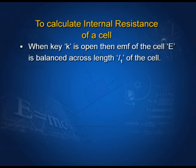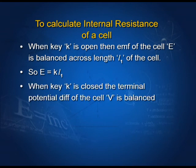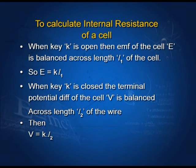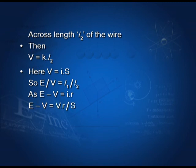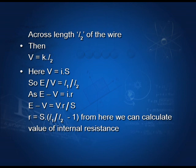When key K is open, the EMF E is balanced across length L1, so E = K·L1. When key K is closed, the terminal potential difference V is balanced across length L2, so V = K·L2. If the external resistance is S, then V = I·S, giving E/V = L1/L2. Since E − V = I·r, substituting I = V/S, we get r = S·(L1/L2 − 1), from which we can calculate the internal resistance of the cell.